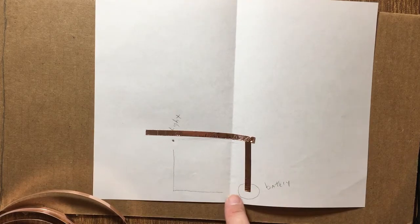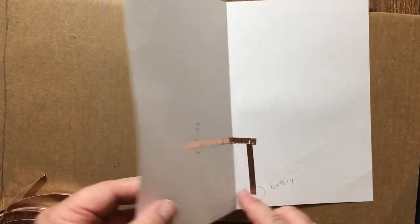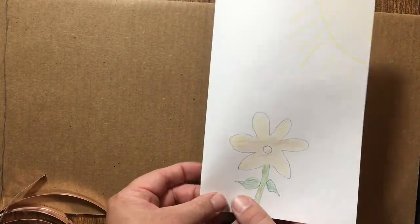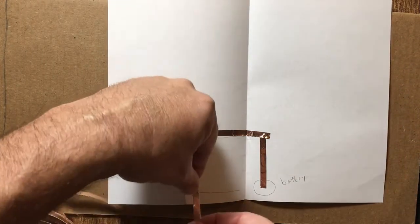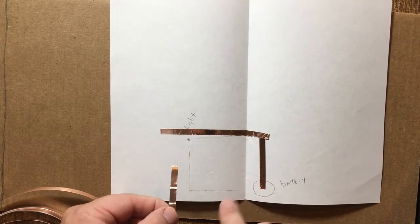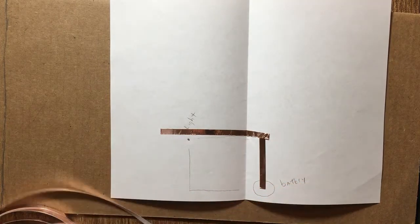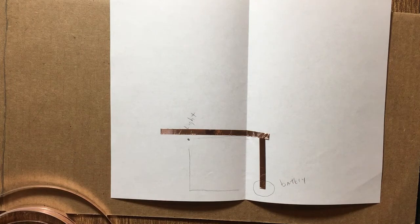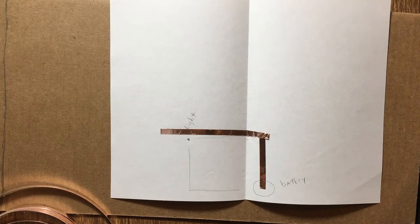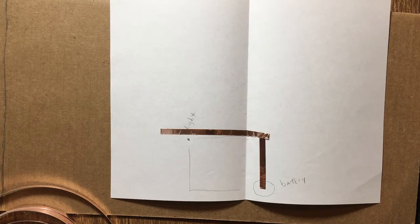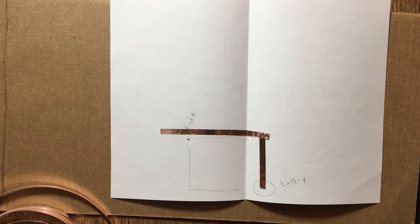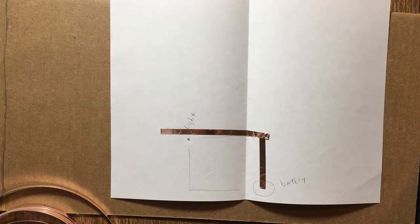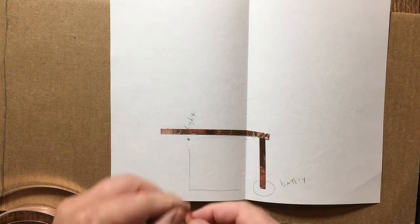Notice I don't go all the way to the battery, because when I close this up, the tape will be on top of the battery. It looks like I don't have a complete path, but I will when we close this. The hardest part is getting the copper backing off - if you do it ahead of time, it coils up on itself.